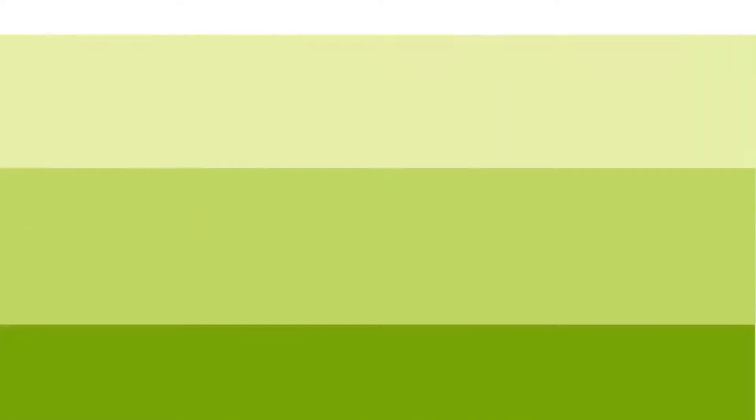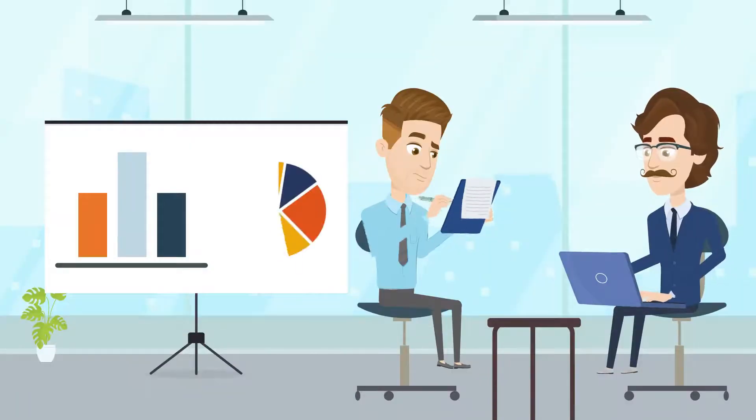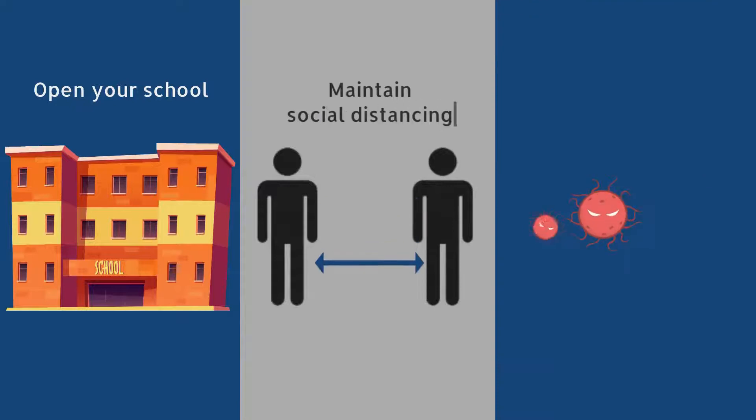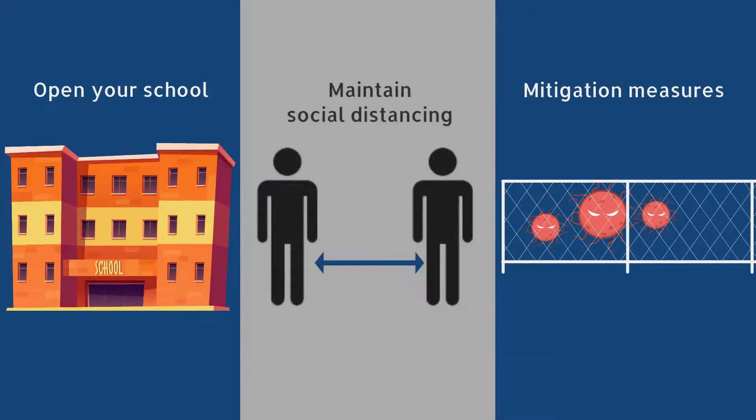The results of these surveillance tests can be used to make important decisions that keep people safe, like whether to open schools, maintain social distancing, or employ other mitigation measures.